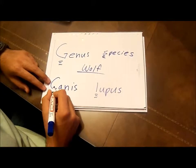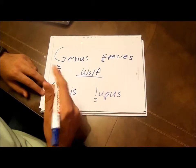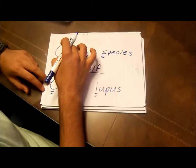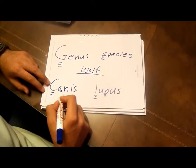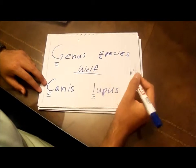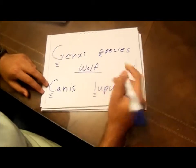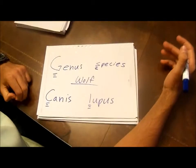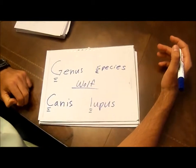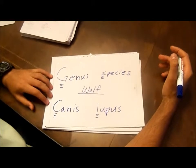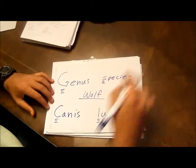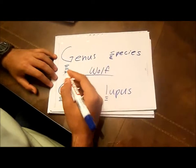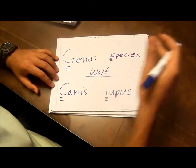I've underlined the capital C here, because you must always remember that the genus' first letter is capitalized, whereas the species' first letter is lowercase. Many kids get this wrong in tests, simply because they write the species' first letter uppercase, or they write both the genus and species in lowercase.